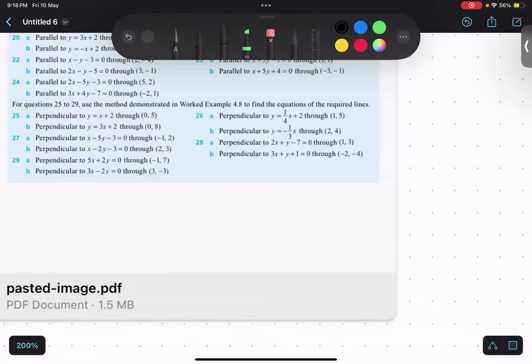So, as we discussed in parallel lines, slopes are equal. When we are talking about perpendicular lines, so this is line 1, it has slope m1.